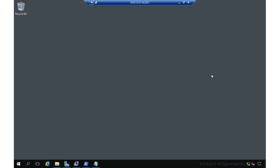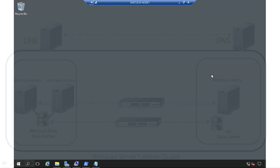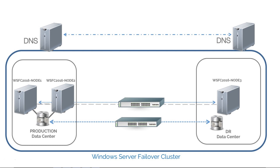In this demo, I'm going to show you how you can create a Windows Server failover cluster running Windows Server 2016 where member servers are not joined to an Active Directory domain. Here's a high-level overview of how the cluster would look. I've got three nodes — two nodes in my production data center and one node in my disaster recovery data center. All of these servers are not joined to my Active Directory domain.